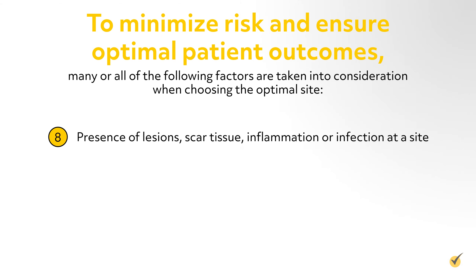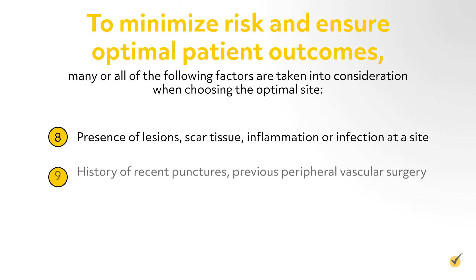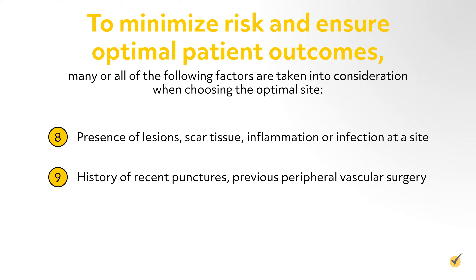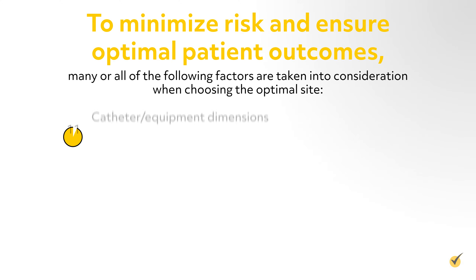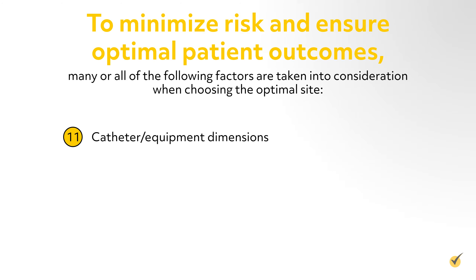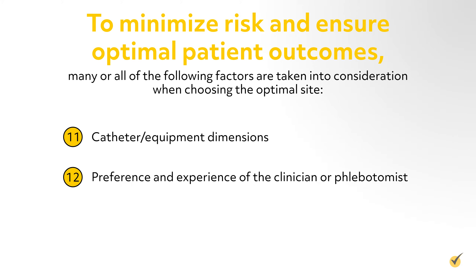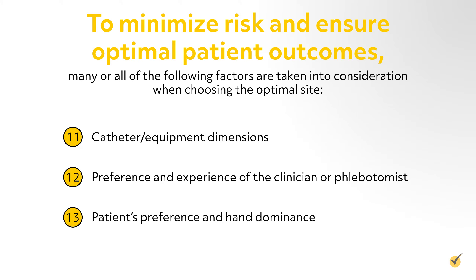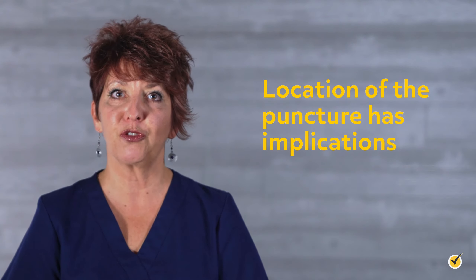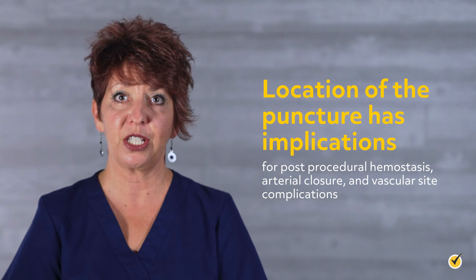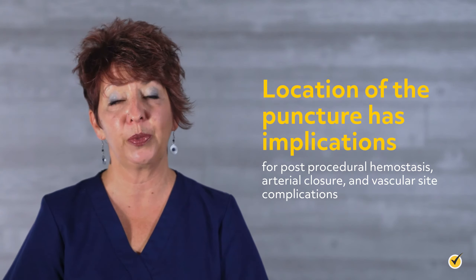Additional site selection factors include: presence of lesions, scar tissue, inflammation or infection at a site, history of recent punctures, previous peripheral vascular surgery, proximity of arterial access site to site of intervention, catheter equipment dimensions, preference and experience of the clinician or phlebotomist, and patient's preference and hand dominance. Additionally, location of the puncture has implications for post-procedural hemostasis, arterial closure, and vascular site complications.